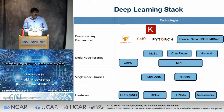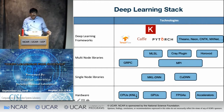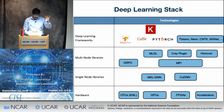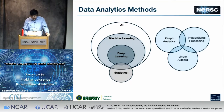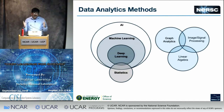Everything below the framework level — hardware, single-node libraries for linear algebra, inter-node communication libraries — is what folks at supercomputing centers worry about in collaboration with industry vendors. It's also important to keep in mind the broad analytics landscape: graph analytics, conventional image and signal processing, conventional linear algebra — these are always going to be there. Many people have sophisticated statistical models or tests they want to continue running on their datasets, and we support that as well.